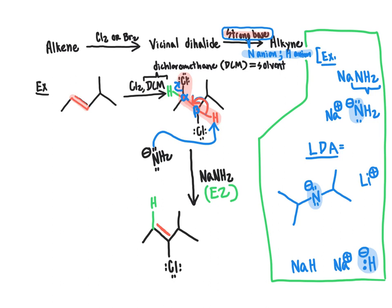Now we have an alkene with a remaining chlorine leaving group. This chlorine-bearing carbon is the alpha position. One spot over is the beta position, where there is a proton we can remove in a second elimination. Removing that beta proton causes the chlorine leaving group to leave and gives us our alkyne product. We bring in a second equivalent of base — NaNH2.